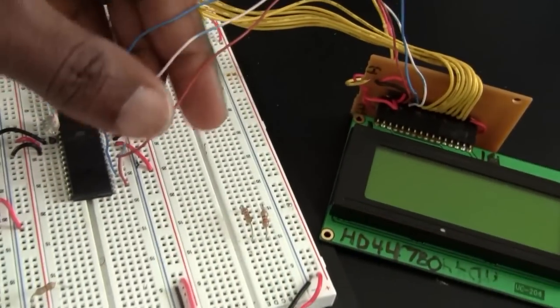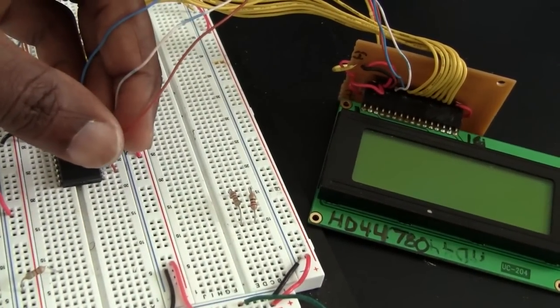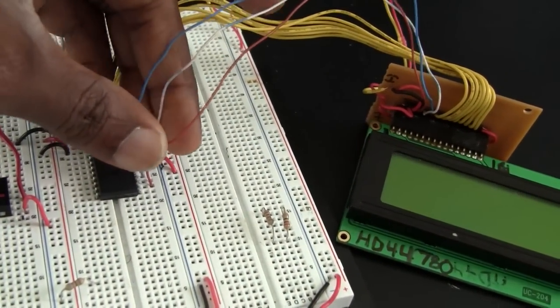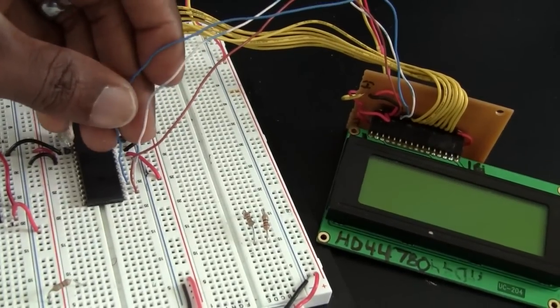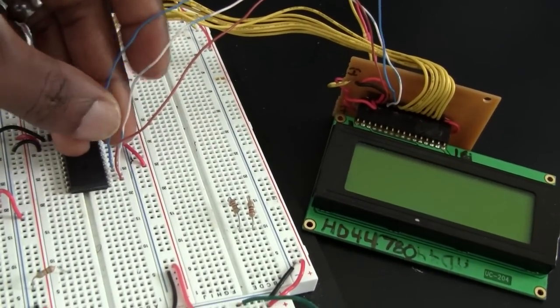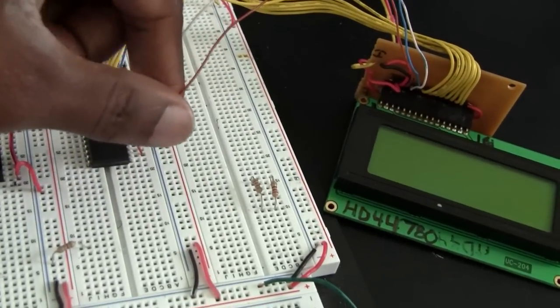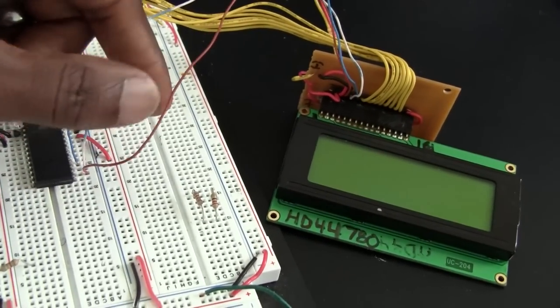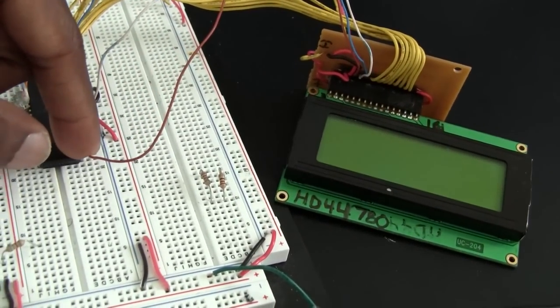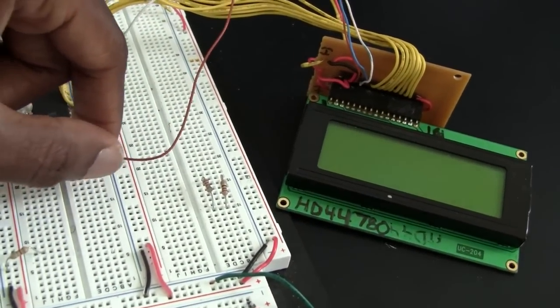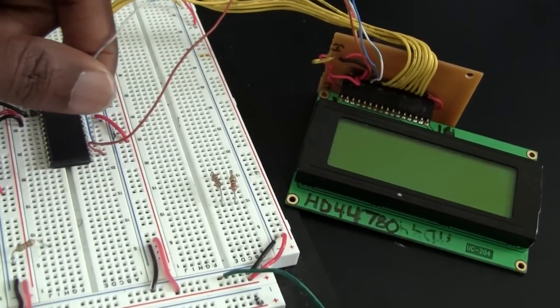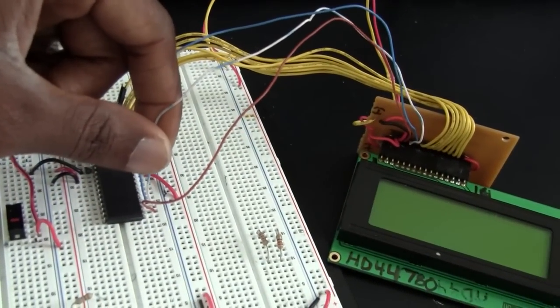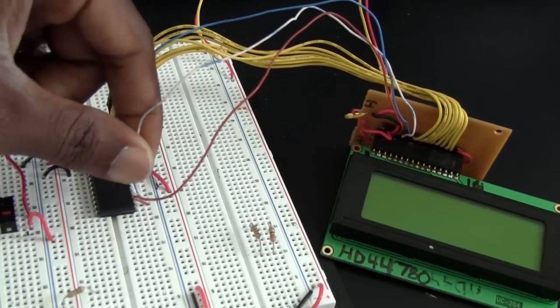These are for actually selecting either command mode or write mode and sending the information to the display. The first one is your register select or function select, either for reading or for data mode or command mode. The next one is for reading or writing mode.